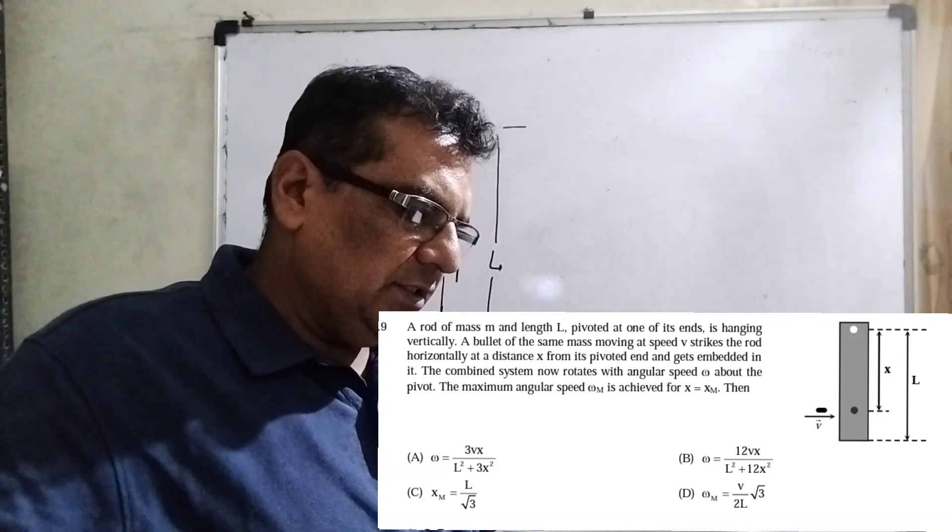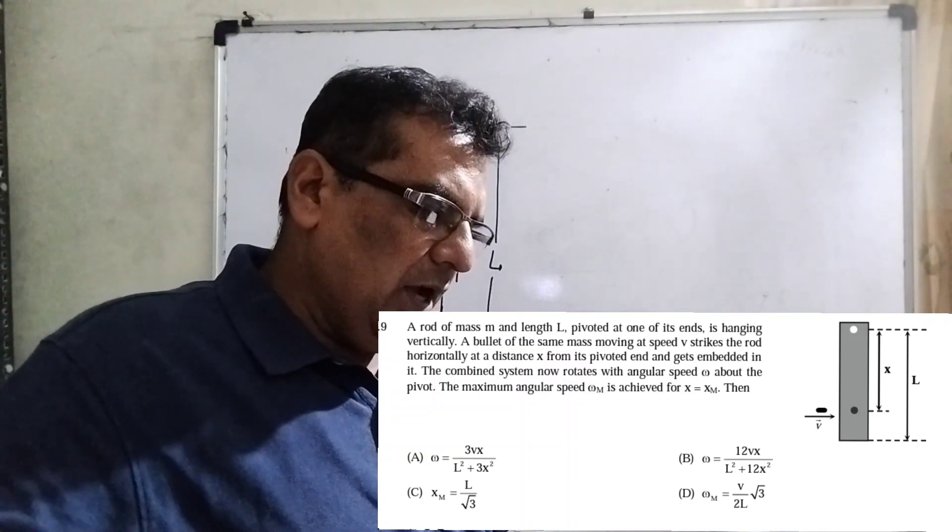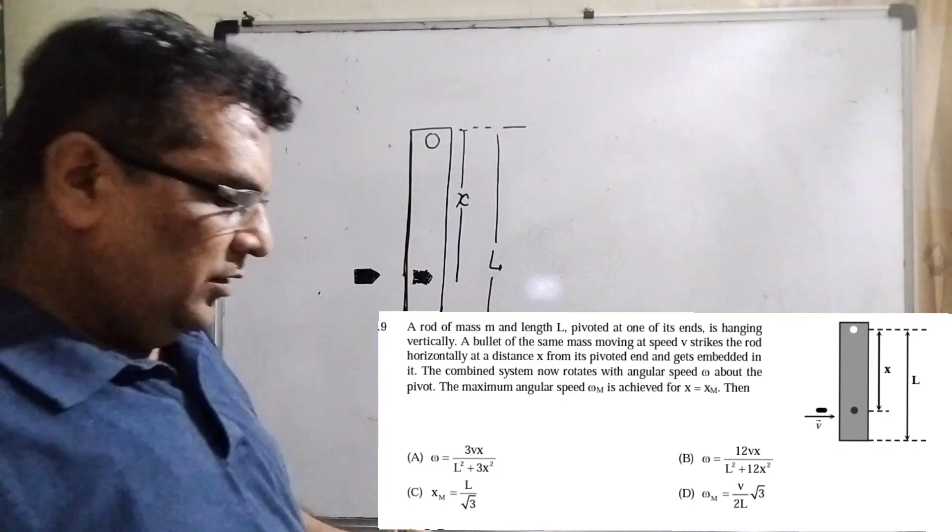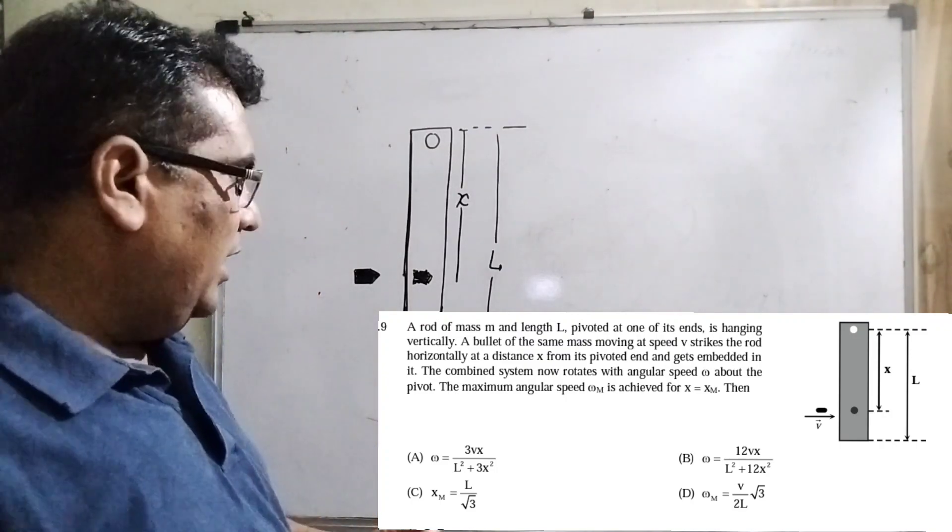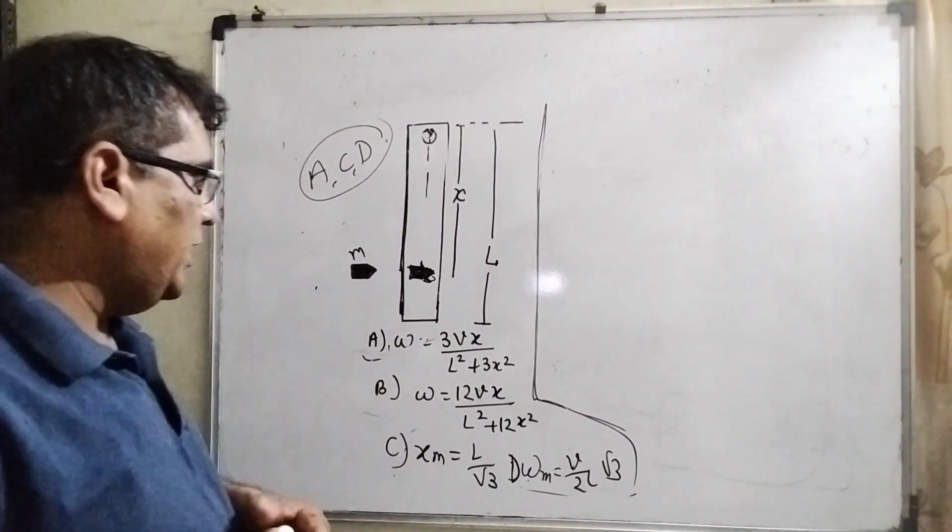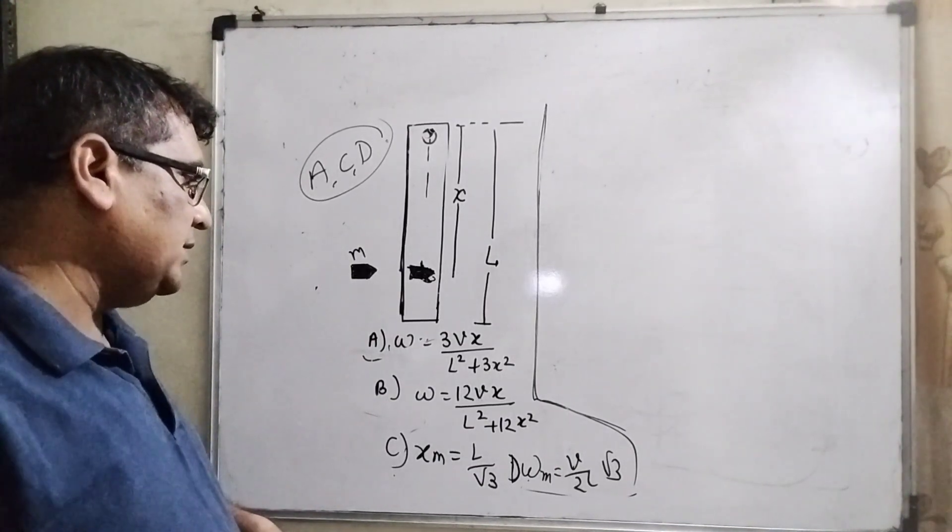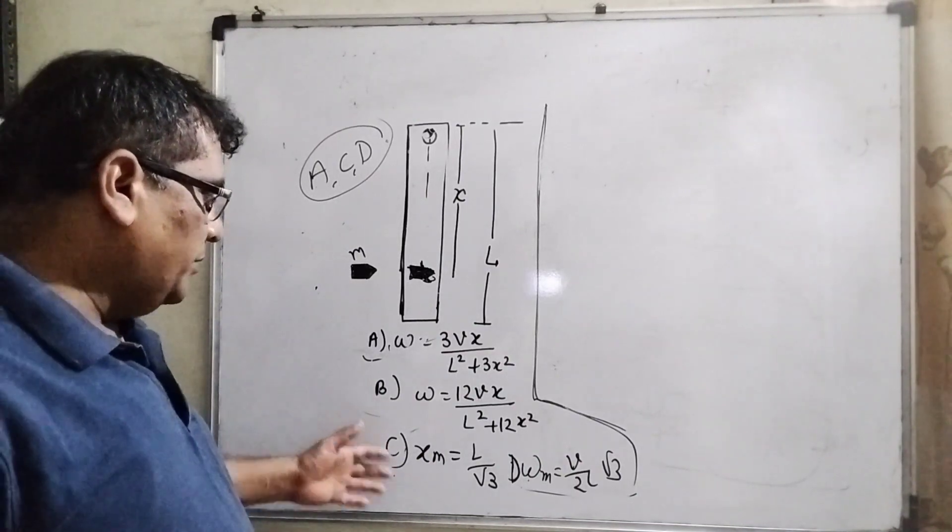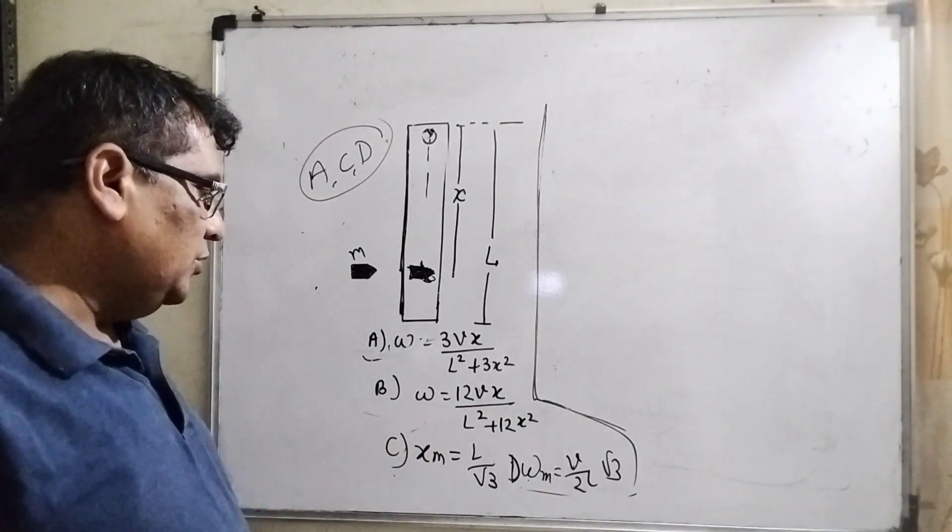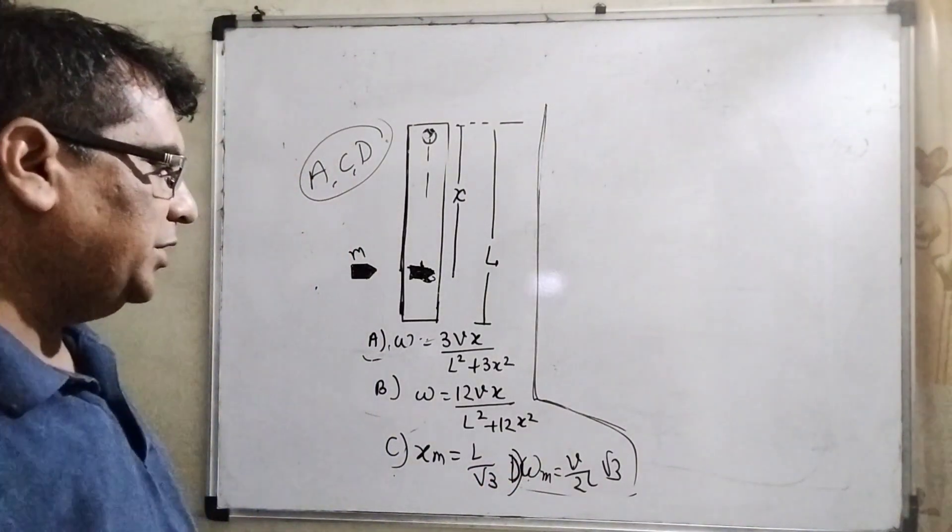The combined system now rotates with angular speed omega about the pivot. The maximum angular speed omega_m is achieved for x equal to x_m. Then you have given four options: omega equal to 3vx upon L² + 3x² (option A), omega equal to 12vx upon L² + 12x² (option B), x_m equal to L by root 3 (option C), and omega_m equal to v root 3 by 2L (option D).